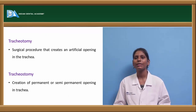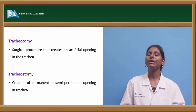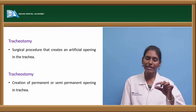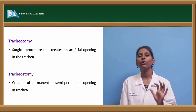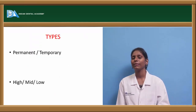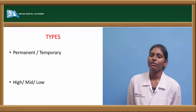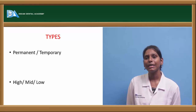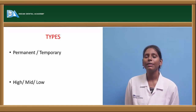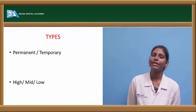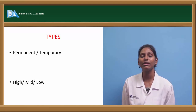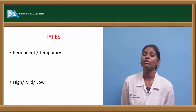Tracheostomy has two types. Tracheotomy creates an artificial opening in the trachea, whereas tracheostomy creates a permanent or semi-permanent opening. There are also two subtypes: temporary tracheostomy, done to create artificial ventilation in emergencies, and permanent tracheostomy, done in cases of large laryngeal tumors or paralysis of the breathing muscles.